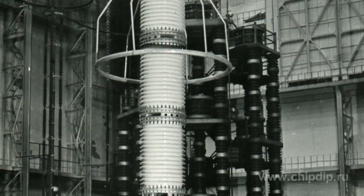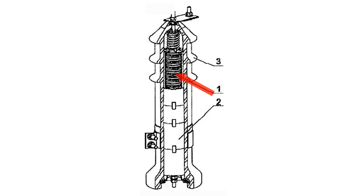One of the traditional types of power protection for equipment used in high-voltage circuits is valve-type arresters. Structurally, they represent series-connected spark gaps and varistors. Shunt resistance is switched on in parallel to spark gaps to equalize voltage along them. Spark gaps, nonlinear and shunt resistances are placed in sealed porcelain insulators, which eliminates the effect of atmospheric conditions on the characteristics of the arrestor.